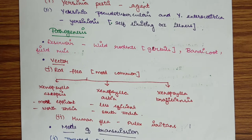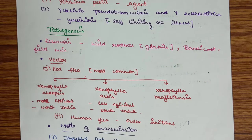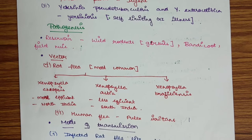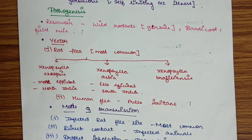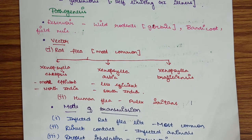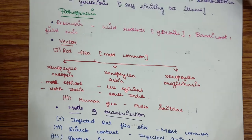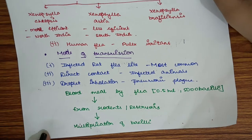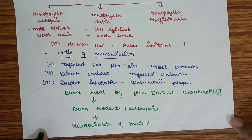Pathogenesis of plague: The reservoir is wild rodents, bandicoot and field mice. The vector is rat flea or human flea, with rat flea being most common. The human flea is Pulex irritans; the rat flea has three species: Xenopsylla cheopis, Xenopsylla astia, and Xenopsylla braziliensis. Xenopsylla cheopis is more efficient and seen in North India. The mode of transmission is by bite of infected flea, direct contact with infected animal, or droplet inhalation in pneumonic plague.